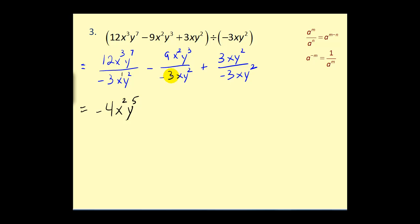Nine divided by negative three would be negative three, but it's minus, so minus negative three would be a positive three, x to the second divided by x to the first, that would give us x, y cubed divided by y squared equals y to the first, plus three divided by negative three, that's negative one, x divided by x equals one, and y squared over y squared equals one.